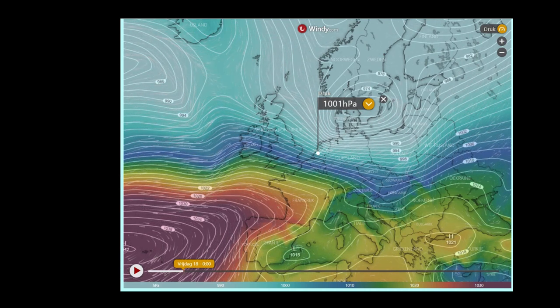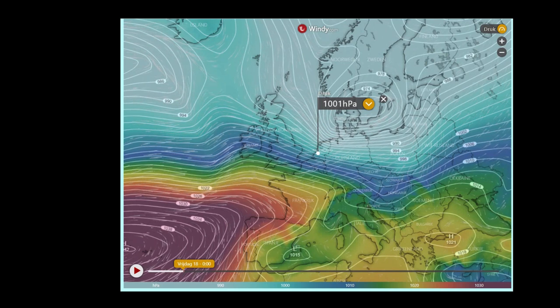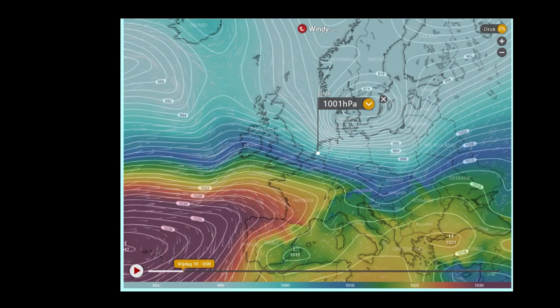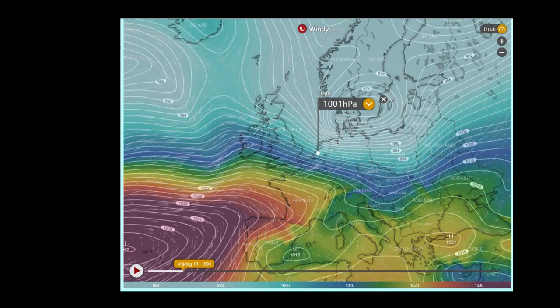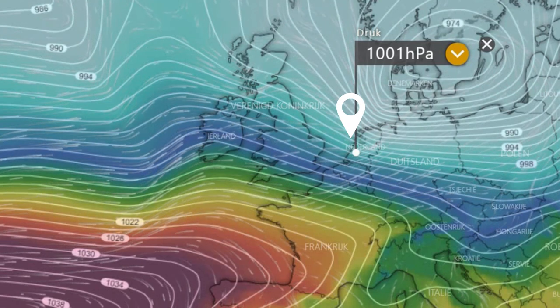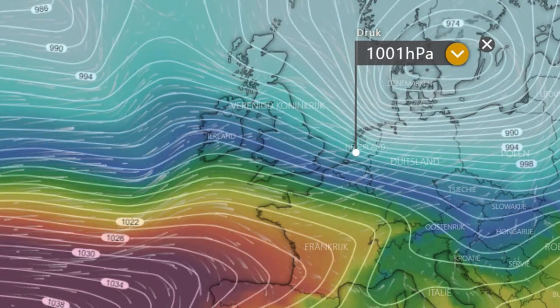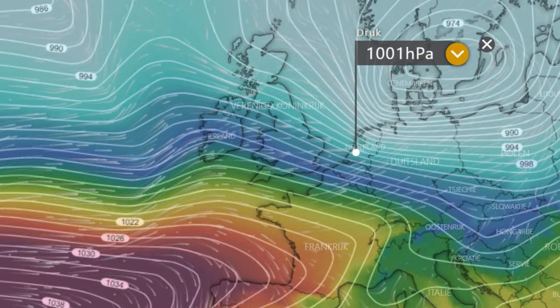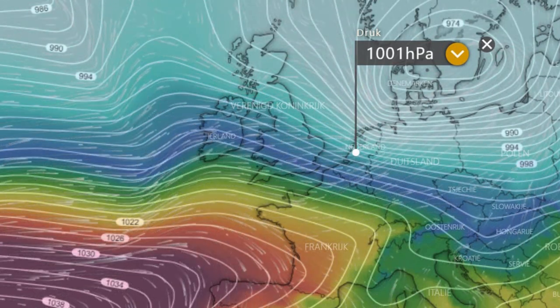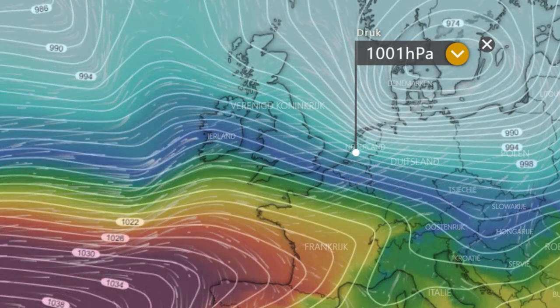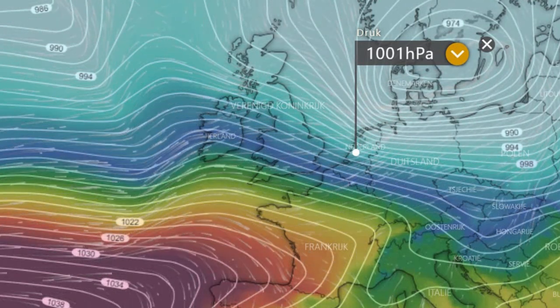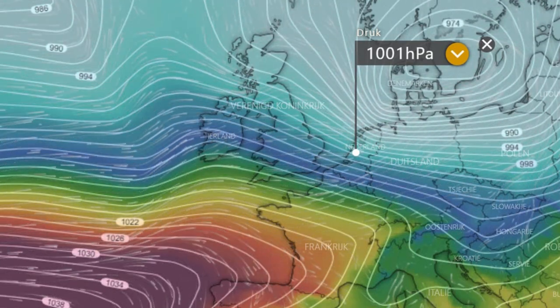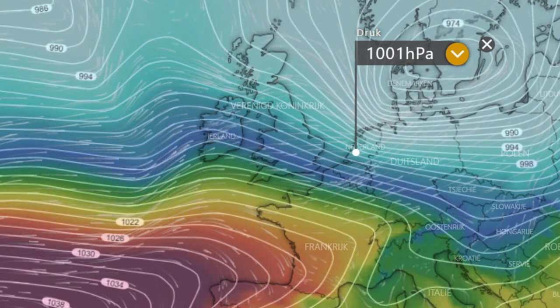The locations with equal atmospheric pressure in this video are connected with lines called isobars. In the southwest we can see that the isobars are lying very close to each other, which indicates a very strong wind. We focus on this part where there are four isobars depicting an atmospheric pressure of, from north to south, 1000, 1002, 1004 and 1006 hectopascal respectively.